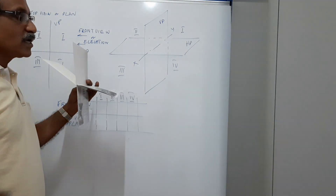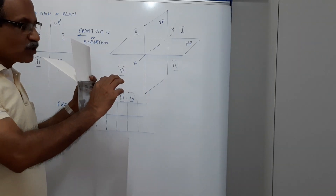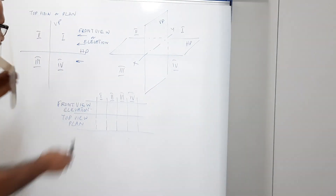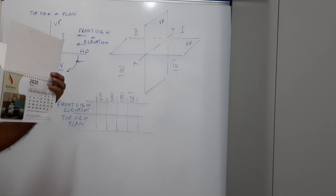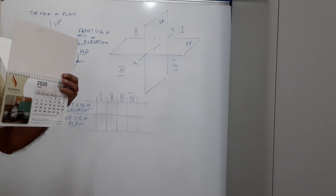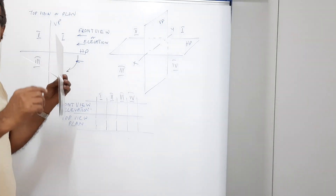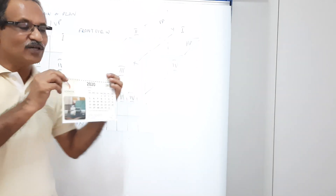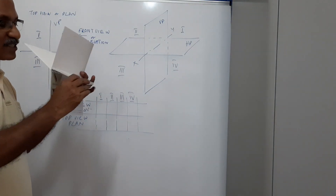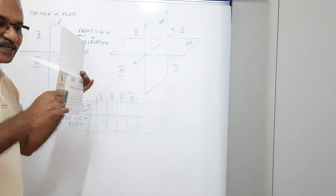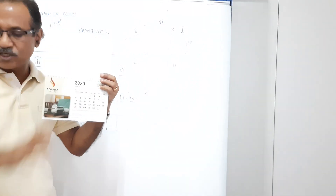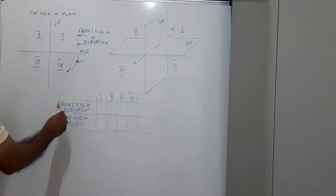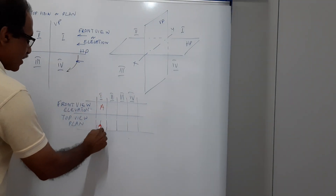Now you cannot see what you have drawn because the HP is horizontal. Rotate the HP through 90 degrees clockwise to open it up. Now you can see: the elevation is above the XY line and the plan is below the XY line. So for the first quadrant — elevation above XY, plan below XY.